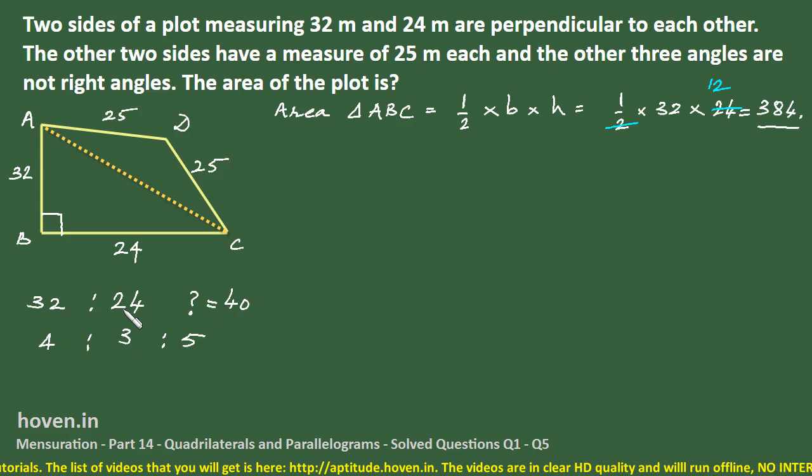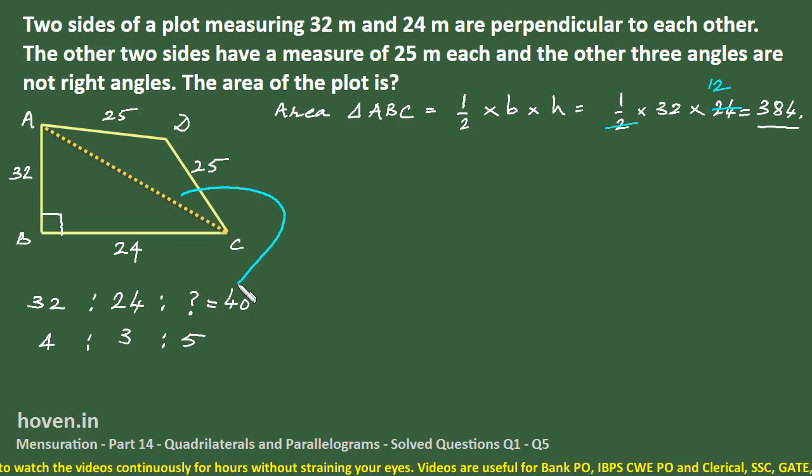And then obviously this question mark will be 5 multiplied by 8 equal to 40. See, 32 is to 24 I wrote. Below them I cut them on to the ratio 4 is to 3. And immediately I recognized that 3, 4 and 5 are Pythagorean. So I completed the third one as 5. Then I went up. I saw that this was cancelled on 8. This was cancelled on 8. And therefore, this question mark should be filled by 40. So what I now deduce is that this third side has a measure of 40.